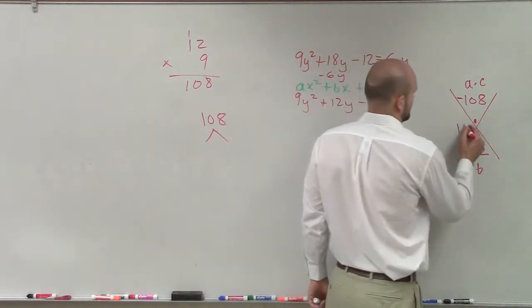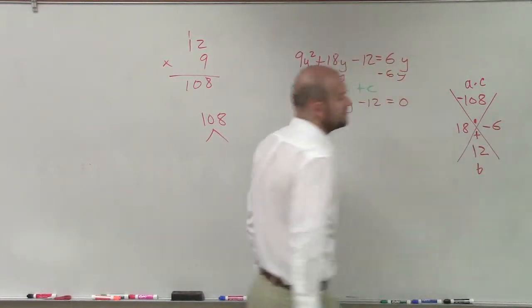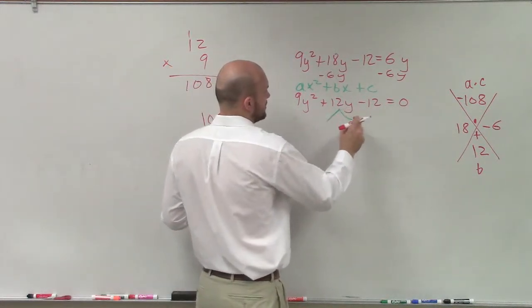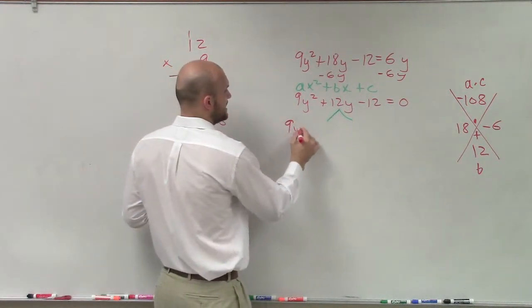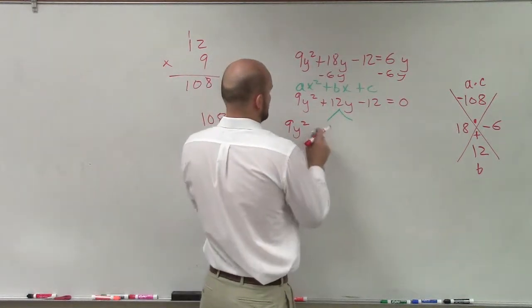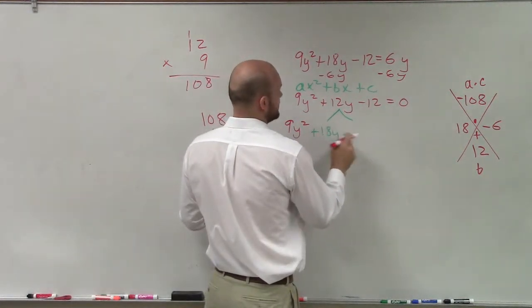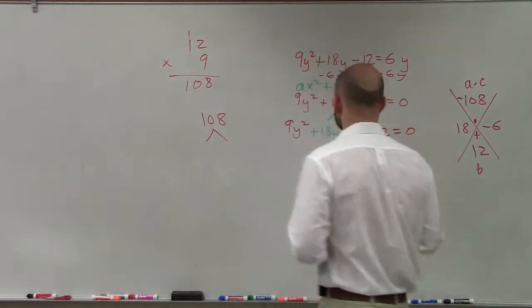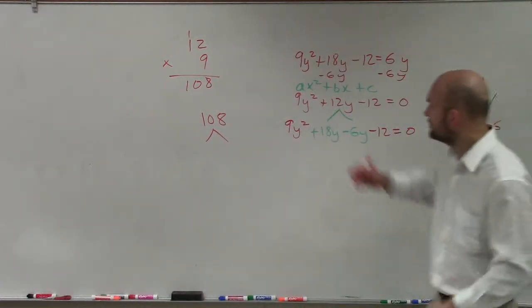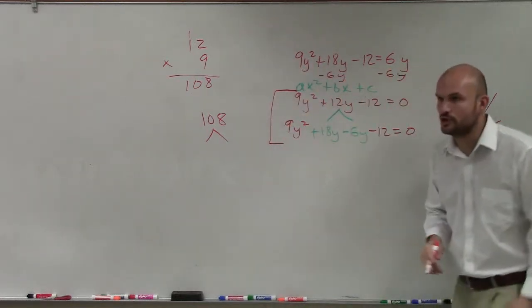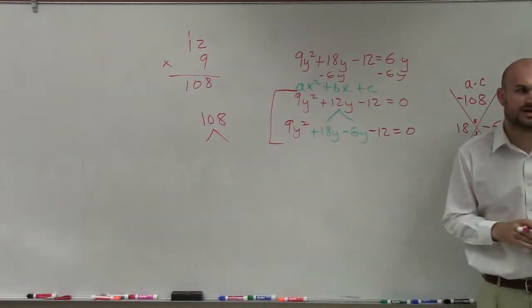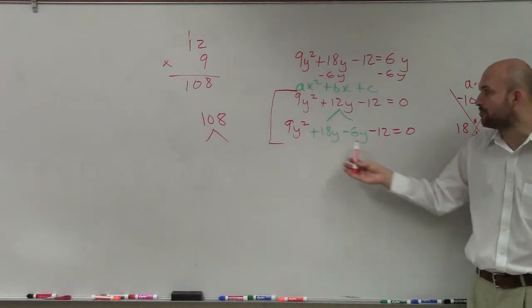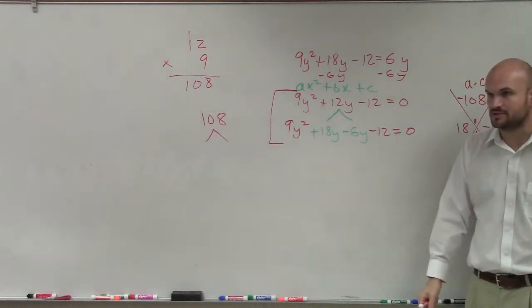So now once you determine those two values, what we do is we split our middle term. So we say 9y² + 18y - 6y - 12 = 0. From this step to this step, I want you guys to notice the value of my quadratic equation has not changed. The only thing I did is I broke apart these two numbers.